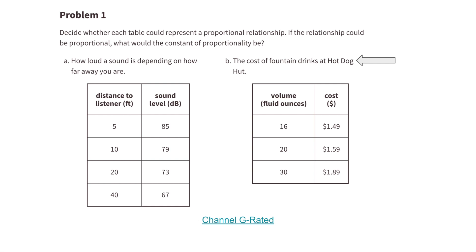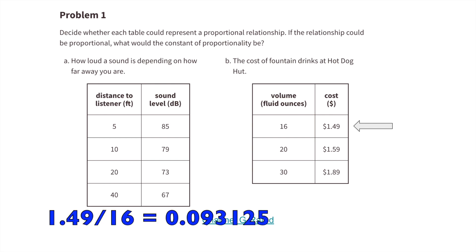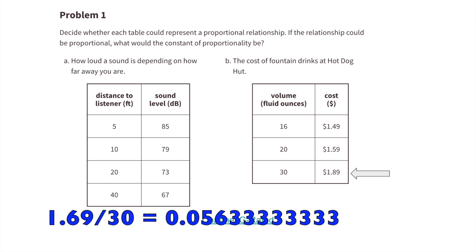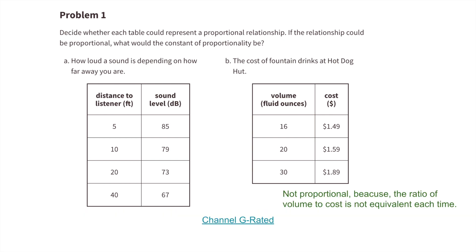B. The cost of fountain drinks at Hot Dog Hut. A ratio of 16 ounces to $1.49, 20 ounces to $1.59, and 30 ounces to $1.89. These are not proportional because the ratio of volume to cost is not equivalent each time.